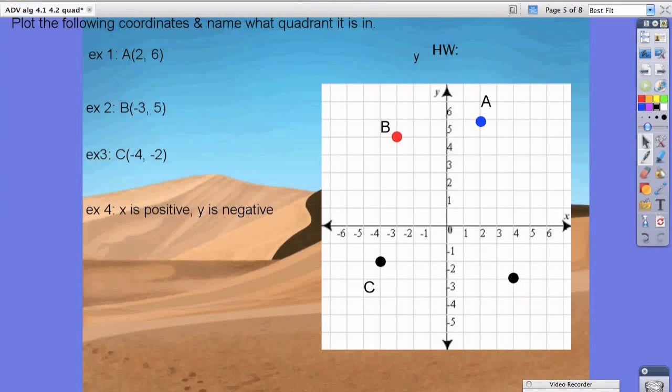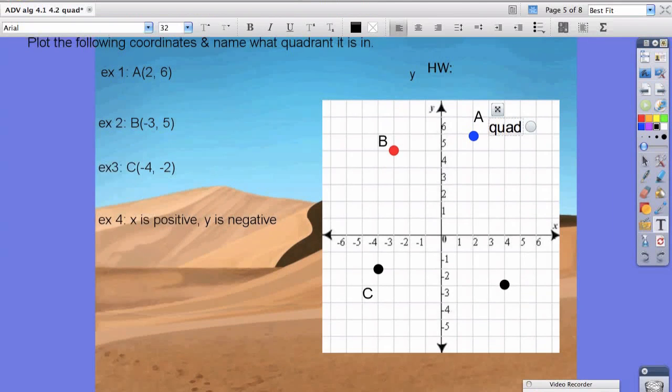Now remember, point A, because it asks us to name what quadrant it's in. Point A is in quadrant 1. Point B is in quadrant 2. Point C is in quadrant 3. And example 4 is in quadrant 4.